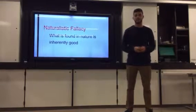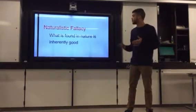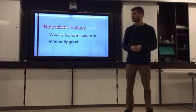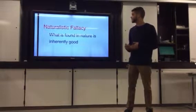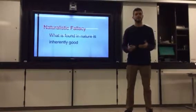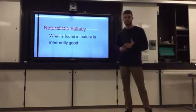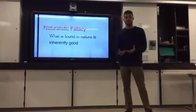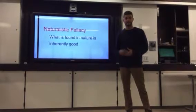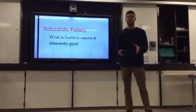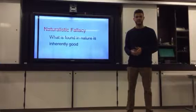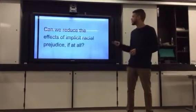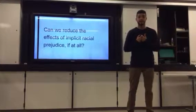Another thing that's important to notice is that we want to make sure that we do not commit this naturalistic fallacy. The naturalistic fallacy essentially states that what is found in nature is inherently good. So just because we find that part of human or primate cognition might put us at a disposition to discriminate against those who are different from us does not necessarily mean that we can't be critical of this or try to change or alter this in some kind of way.